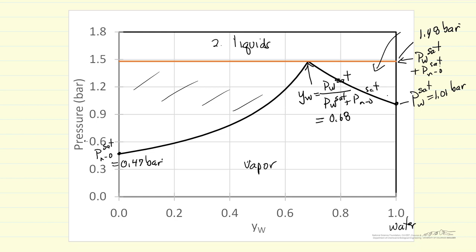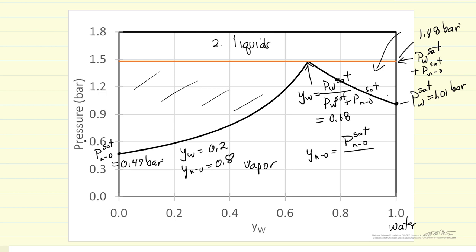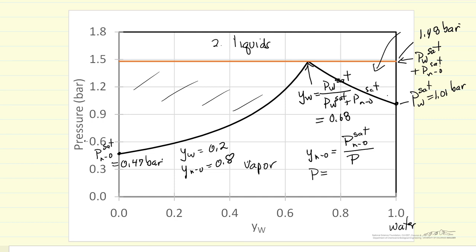How do we generate these two curves? Let's look at mole fraction water of 0.2, which means the mole fraction of n-octane is 0.8. We want to determine the pressure. The mole fraction of n-octane equals its partial pressure over the total pressure. Since liquid is present, that partial pressure is its saturation pressure: 0.47 bar divided by the mole fraction 0.80 gives a total pressure of 0.59 bar. And that's how we plot this point.